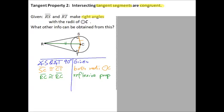And now we have a right angle and a leg, and therefore we can say triangle RCS is congruent to triangle RTC, and that is because of the hypotenuse leg theorem.